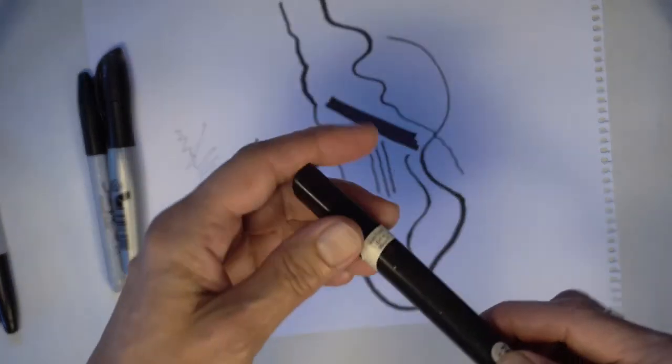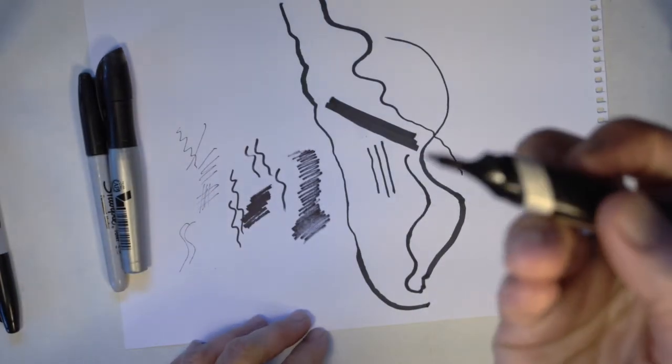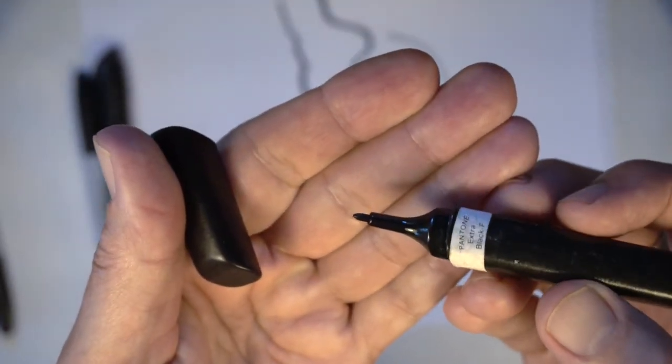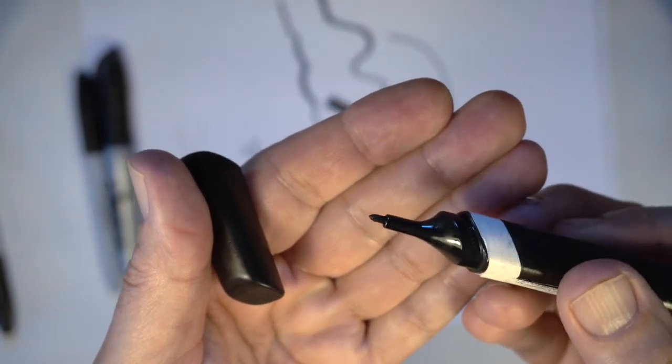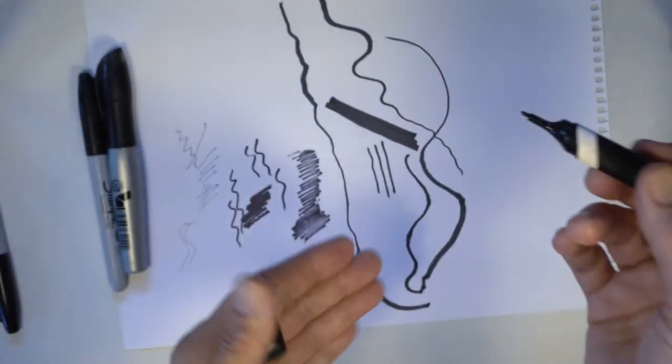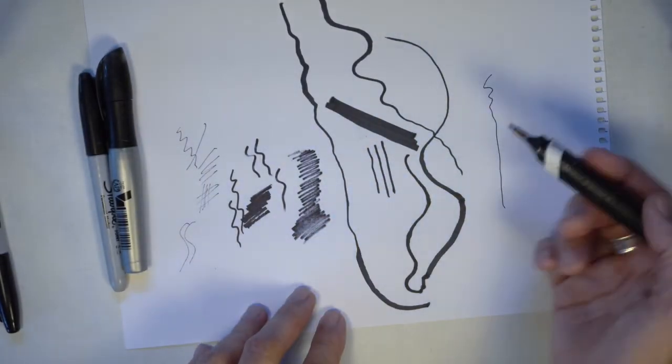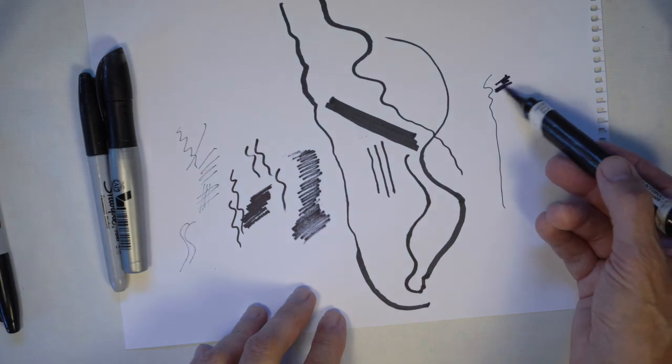Last but not least, I have here a Pantone brand marker, and it has a different kind of point completely. It's more like the fine point Sharpie marker. And when I draw with this one, if I hold it vertically, I get a very fine point to it, fine mark rather.